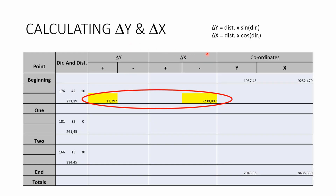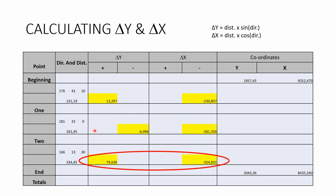Next, we calculate our delta Y and delta X. Delta Y is calculated using: distance times sine of direction. For example, 231.19 times the sine of the given direction gives a value of 13.297. Delta X uses a very similar formula, but with cosine instead: distance times cosine of direction. We do this for all three lines, so we get three delta Y and three delta X values.